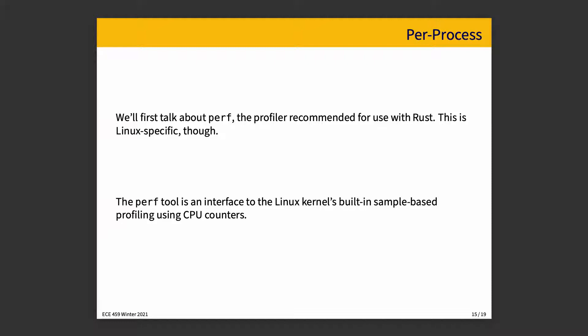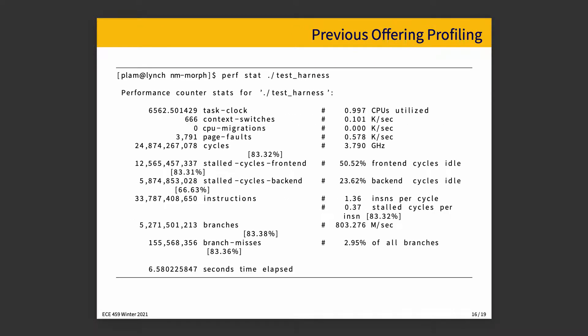Here's a quick example of what some of the output would look like. So perf stat on this test harness — this was based on old assignment code from a previous offering of the course — gives you a nice breakdown of what's going on, and you can use that to determine certain things about your program, whether a change made it better or worse.